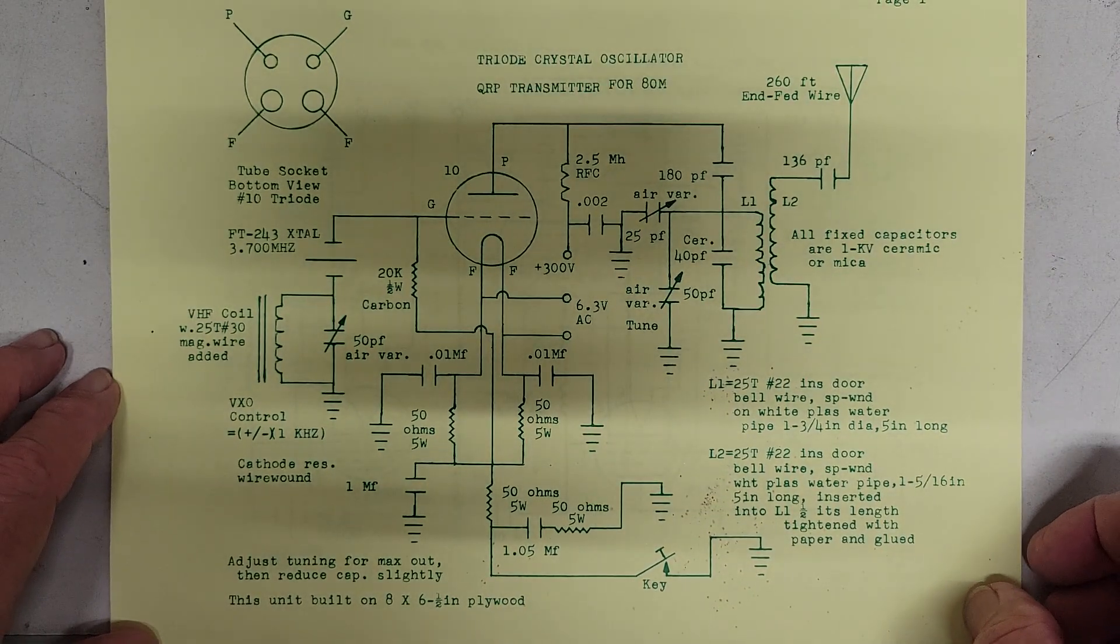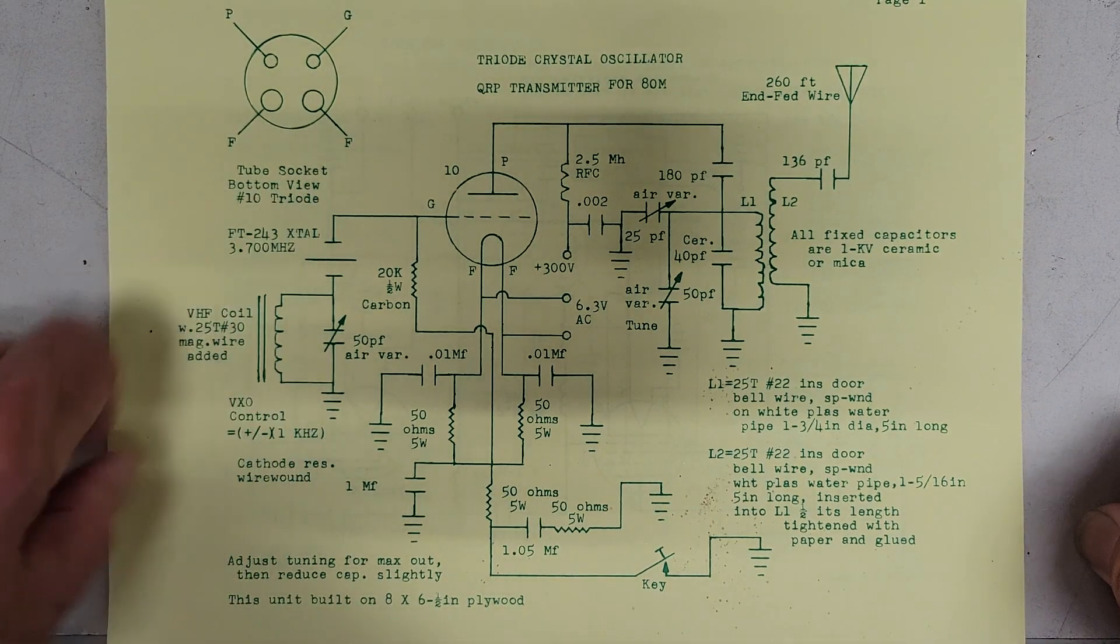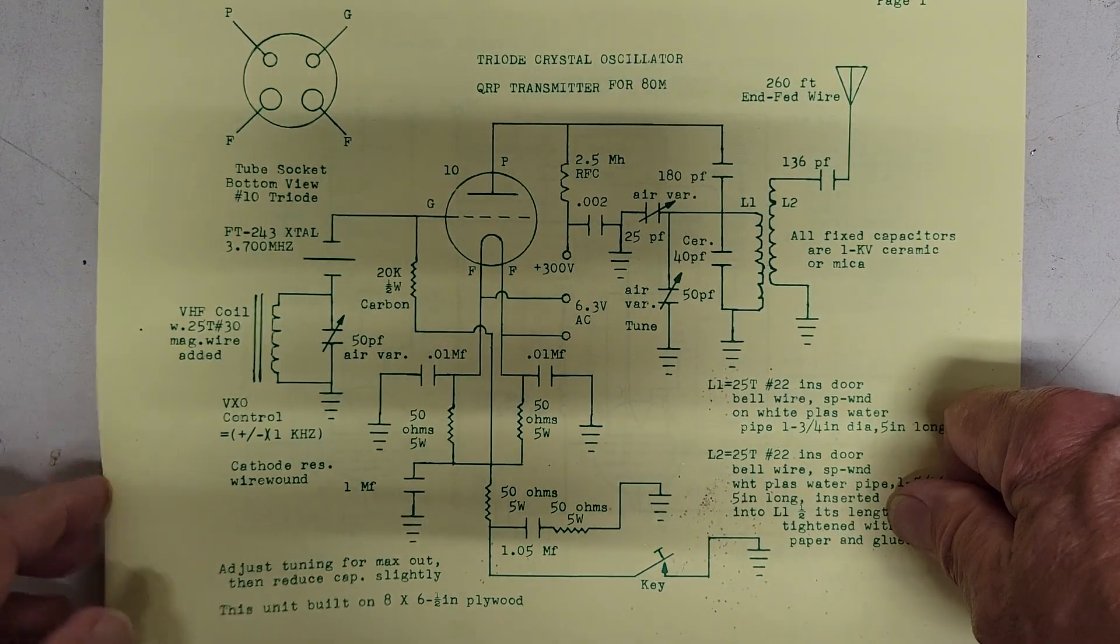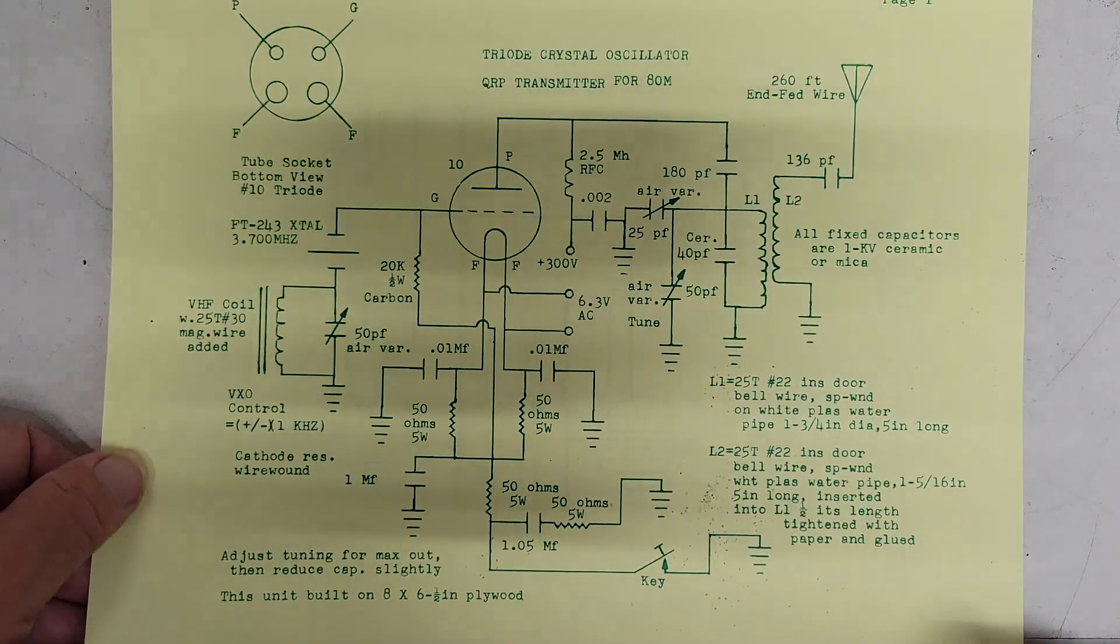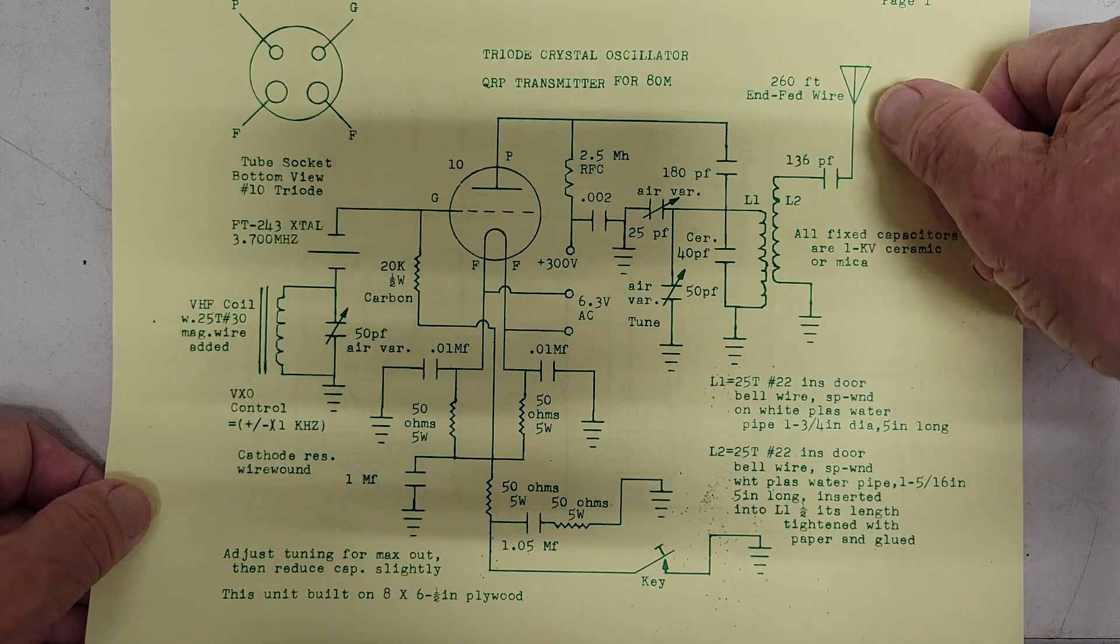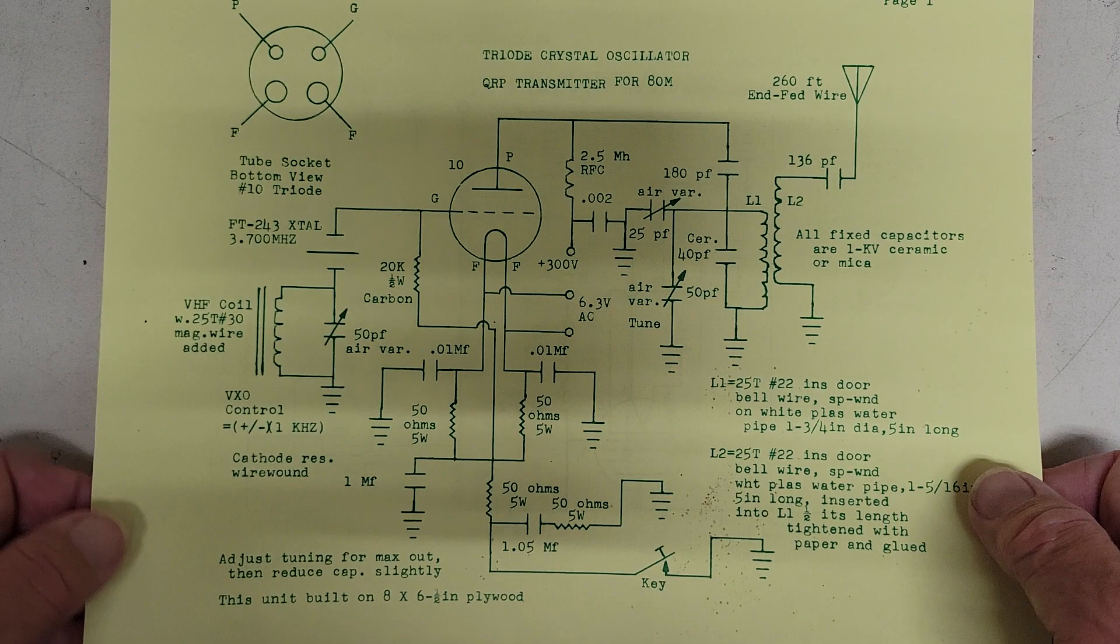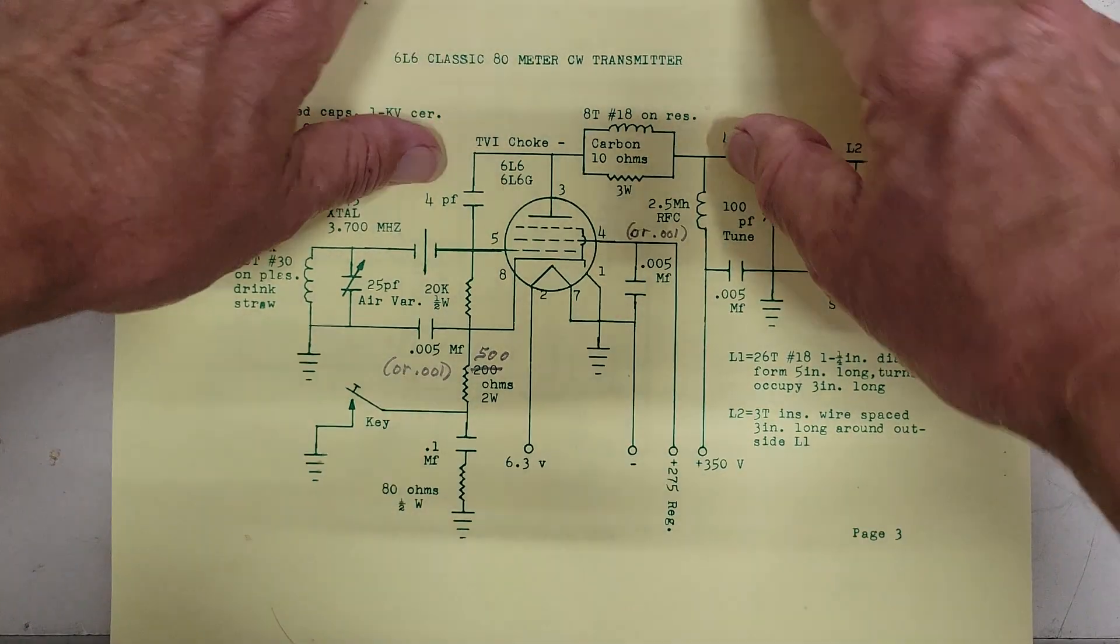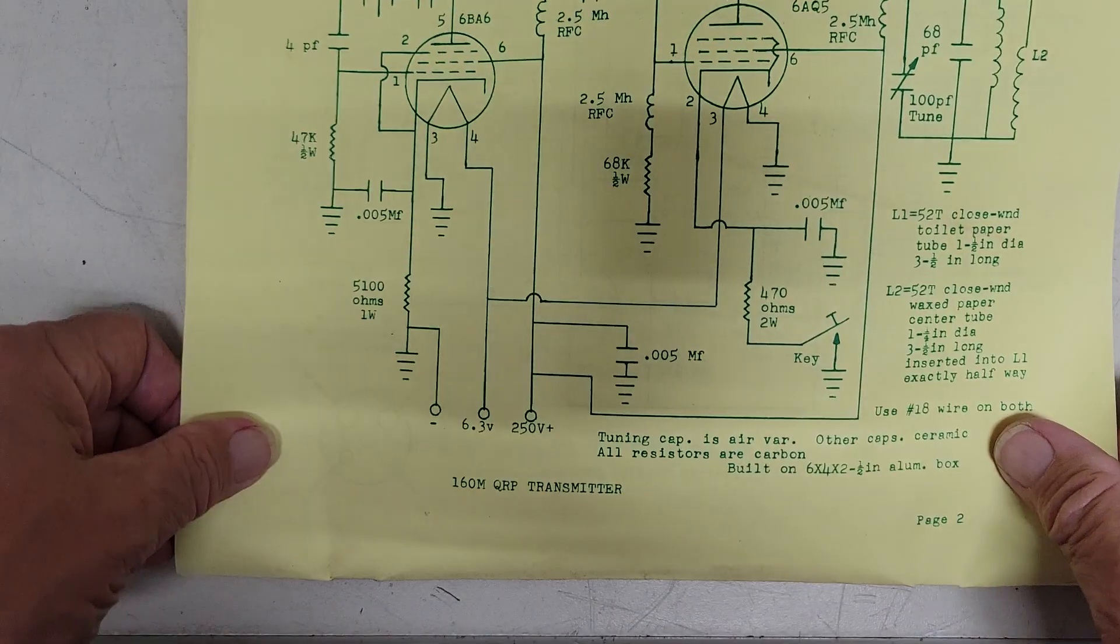Now, some of these projects use a number 10, a type 10 tube triode. They look like a light bulb, a really old-time tube. Now this is a little QRP transmitter for 80 meters. And apparently it has a high-impedance output here for a 260-foot wire antenna.